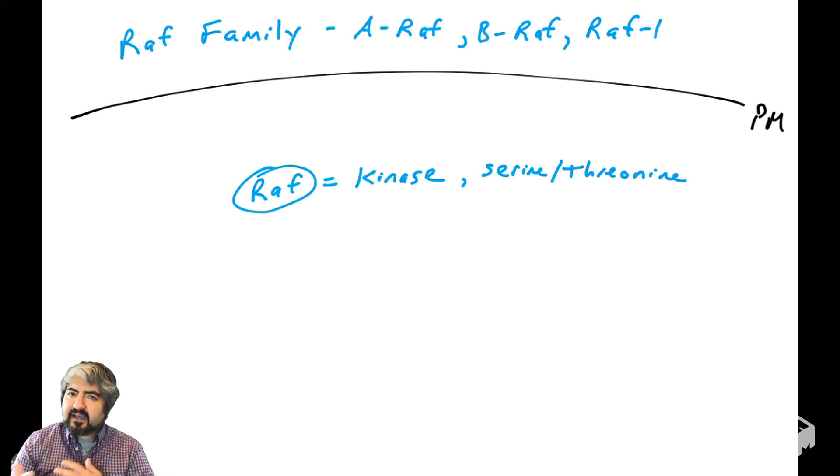A serine-threonine kinase will add phosphate groups to either serine residues or threonine residues, not every serine and threonine, just the ones that are in its substrates in the substrate binding domain.